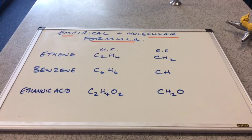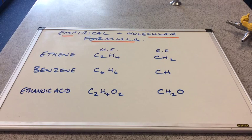In this video, we're going to look at empirical and molecular formula. We're going to look at what we mean by these two types of formulae, and how to calculate them from data. So on the board there, you've got three organic molecules: ethane, benzene, and ethanoic acid.